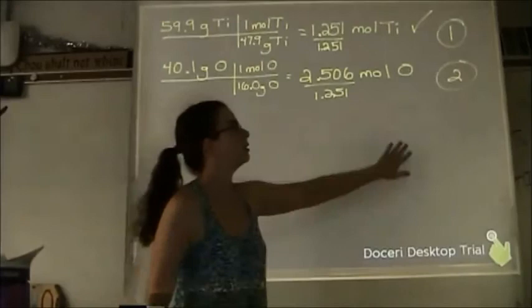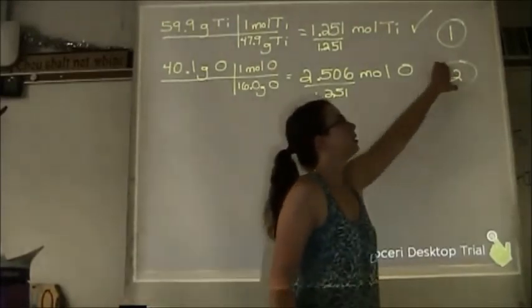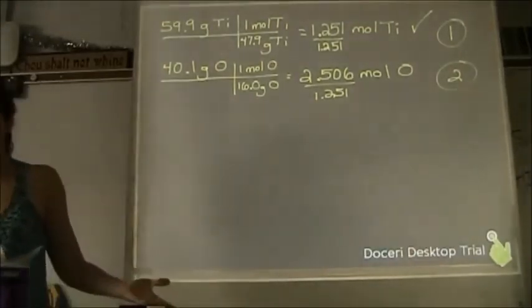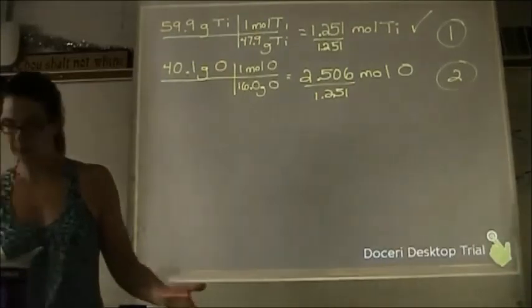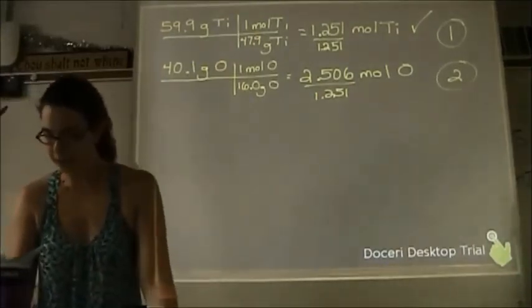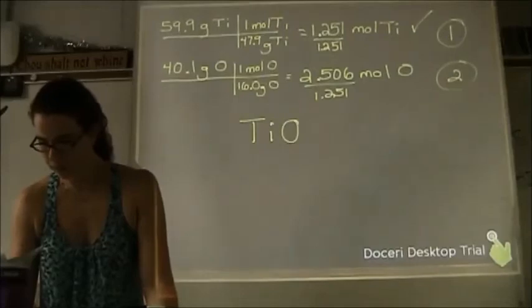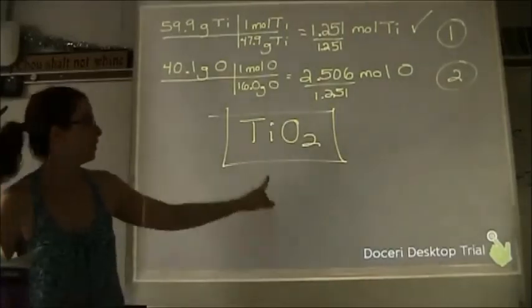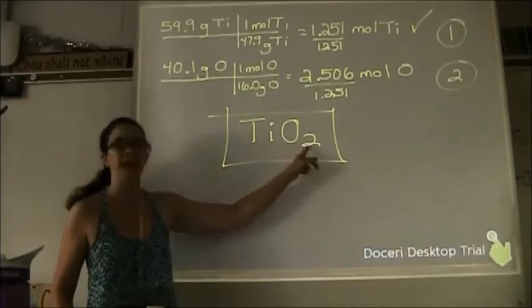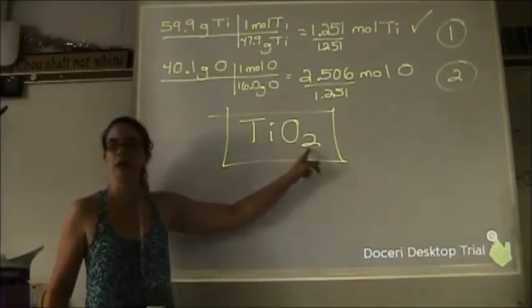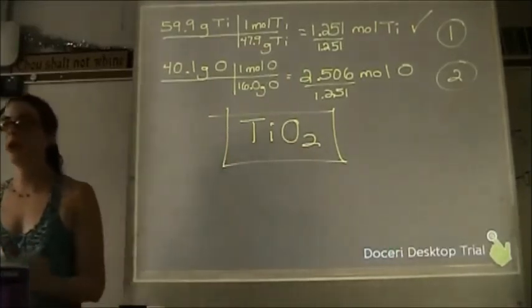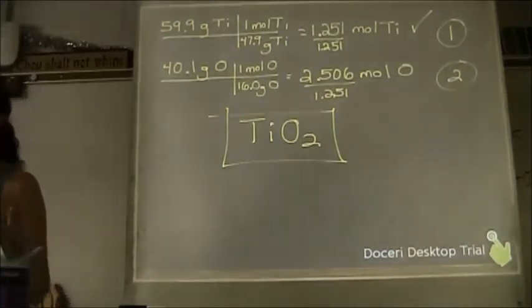What do these numbers become? The subscripts. Can those subscripts be reduced any further? No. So the empirical formula is TiO₂.